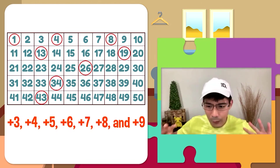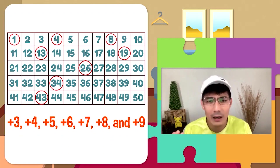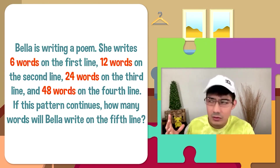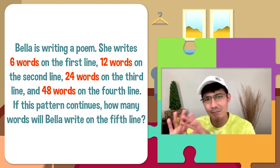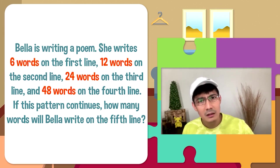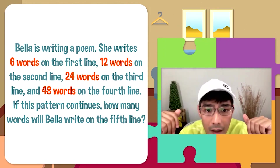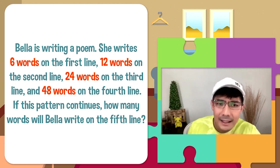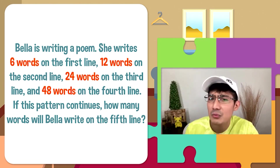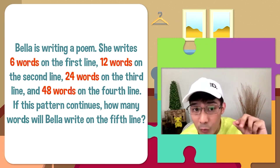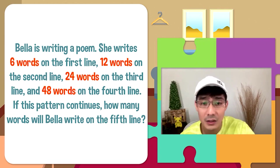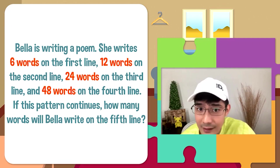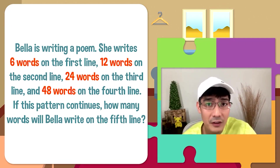Tapos na — 2 down, 1 more to go. Sanay tayo sa mga numbers. Paano to? Word problem? Basahin muna natin ng maigi para ma-solve natin ng tama. Bella is writing a poem. She writes 6 words on the first line, 12 words on the second line, 24 words on the third line, and 48 words on the fourth line. If this pattern continues, how many words will Bella write on the fifth line?